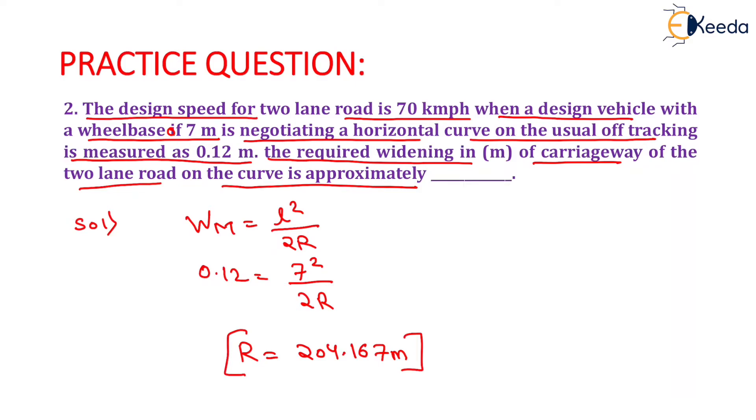Now, we need to calculate the value of extra widening which will be equals to NL squared upon 2R plus V upon 9.5 root R.